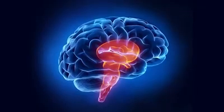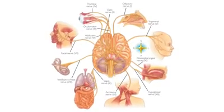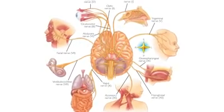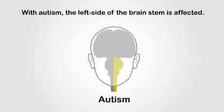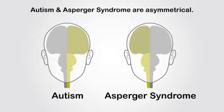The evidence is so obvious you can literally see it on someone's face. The brain stem is the little part of your brain that connects it to your spinal cord. It powers your sense of taste, smell, hearing, your ability to move your eyes and your face, among many other important things. My theory is that autism and Asperger's syndrome are often the result of injury to a particular side of the brain stem — they're asymmetrical. With autism, the left side of the brain stem is affected. With Asperger's, it's the right. That's the difference.